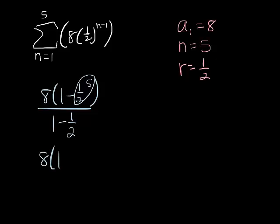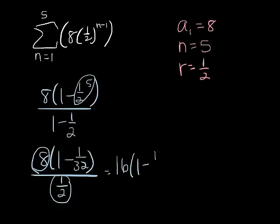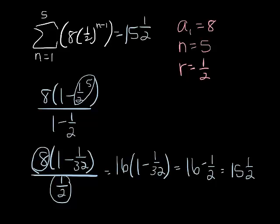8 divided by 1 half, that's going to give me 16 times 1 minus 1 over 32, which if I use my distributive property, it's going to give me 16 minus 1 half, which gives me 15 and 1 half. So your sum here is 15 and 1 half.